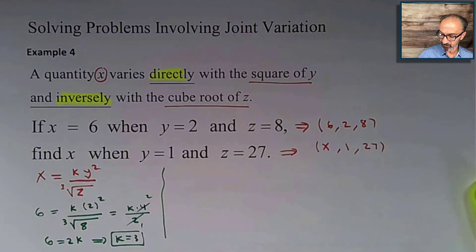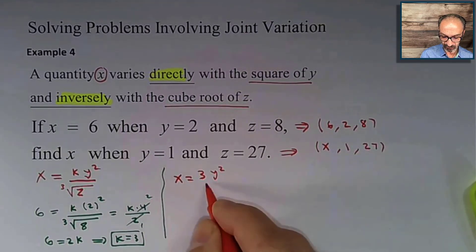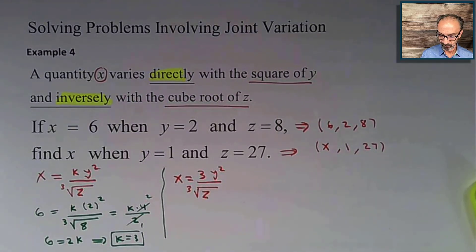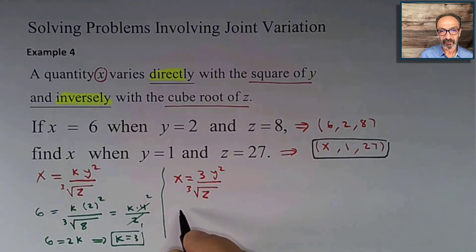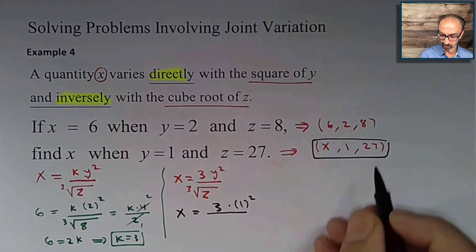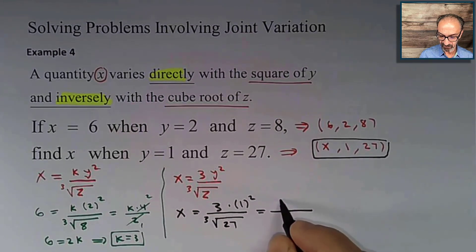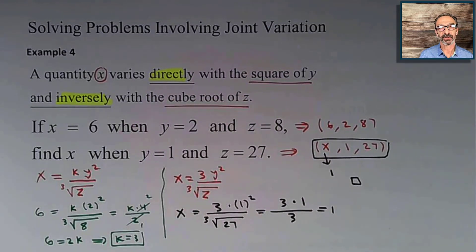The formula becomes x equals 3 times y squared over the cube root of z. Plugging in y equals 1 and z equals 27: x equals 3 times 1 squared over the cube root of 27, which is 3 times 1 over 3, simplifying to 1. So x equals 1. Thank you for watching — if you like this video, hit the like button and subscribe.